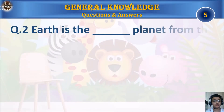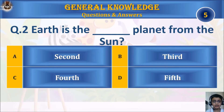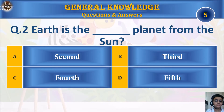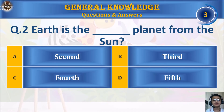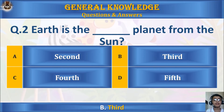Question 2: Earth is the — A: second planet from the sun. B: third planet from the sun. C: fourth planet from the sun. Or D: fifth planet from the sun. Your time starts. The answer is B: third planet from the sun.